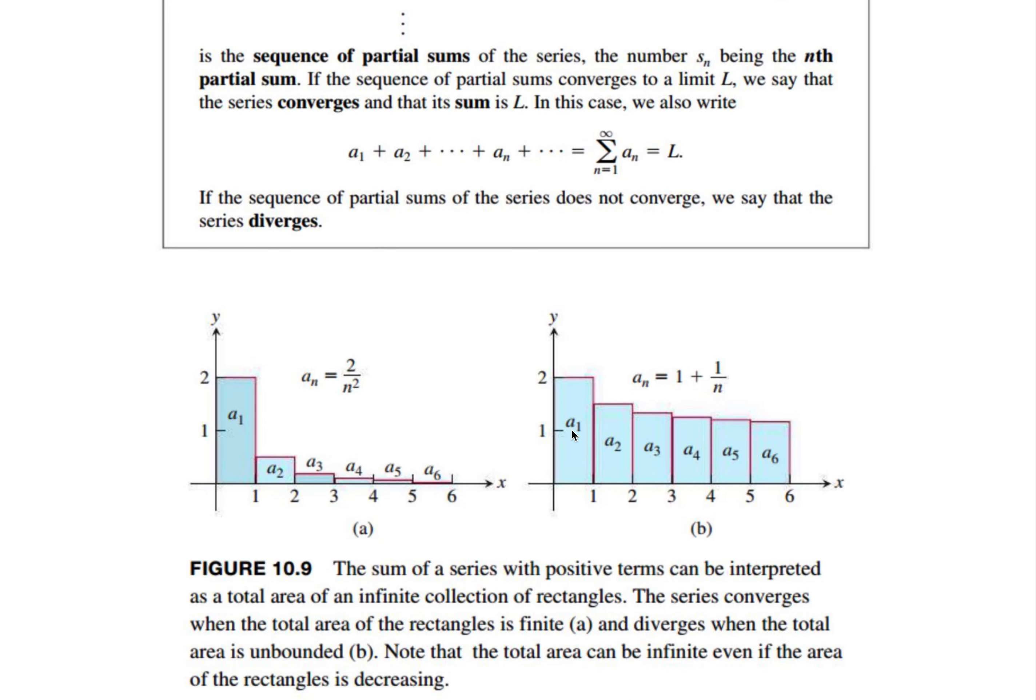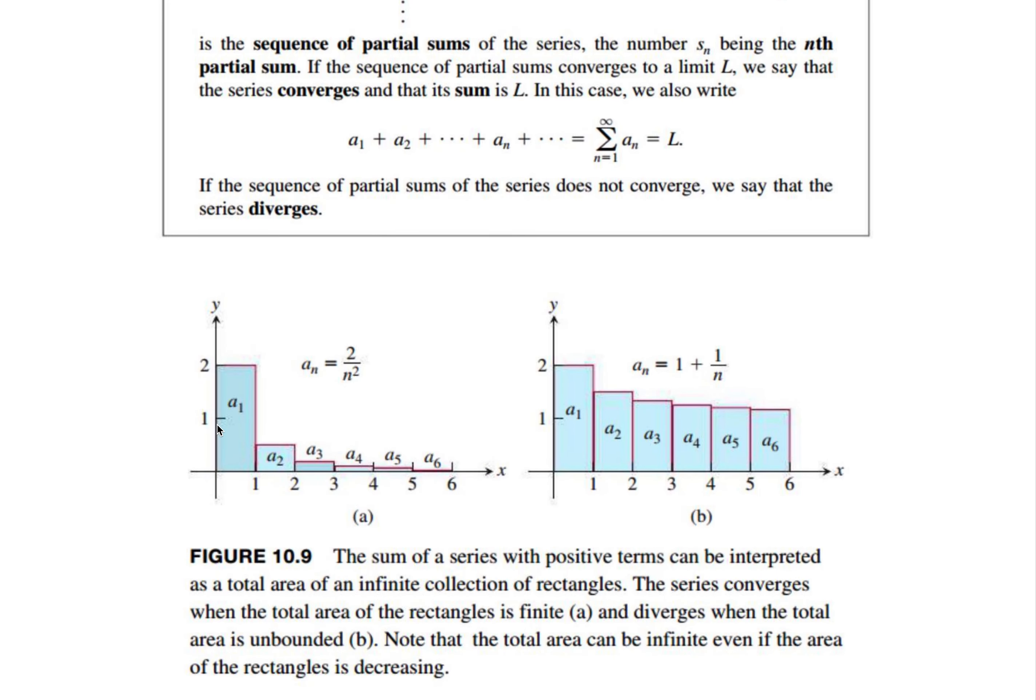And I've got a picture here, and it says at the bottom, the sum of a series with positive terms can be interpreted as a total area of an infinite collection of rectangles. You can see on the left here, this picture, a_n is 2 over n squared.